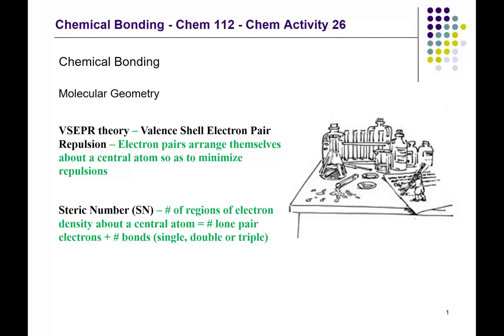The principle is based on what's called the VSEPR theory, which was proposed by Donald Gillespie from McMaster University. VSEPR theory stands for valence shell electron pair repulsion — the idea that electron pairs will arrange themselves about a central atom so as to minimize repulsion.